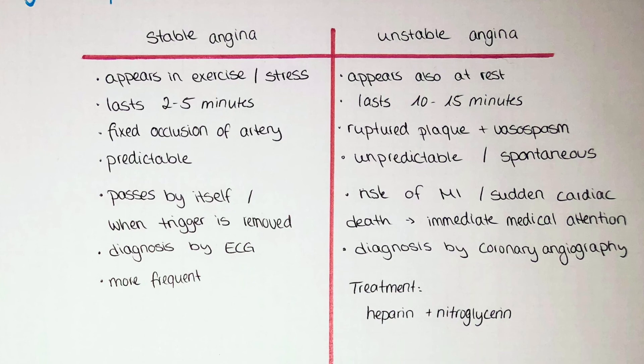Unstable angina severely increases the risk for myocardial infarction and sudden cardiac death, as suddenly the blood supply to the cardiac muscle tissue is decreased and the heart has no chance of developing compensatory mechanisms. The diagnosis is usually not done by ECG but rather by coronary angiography. Unstable angina is a medical emergency and requires immediate treatment, which usually consists of heparin and nitroglycerin to dissolve the clot and dilate the affected vessels.